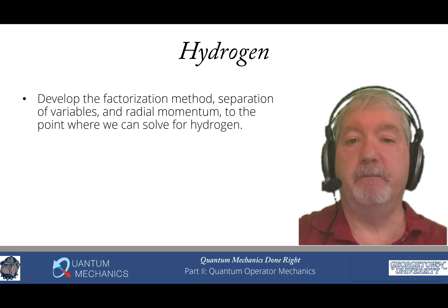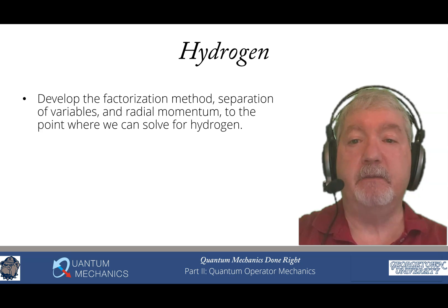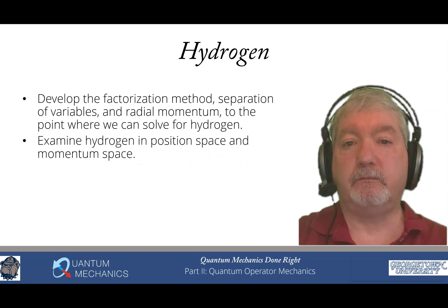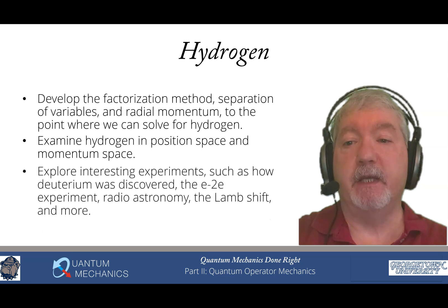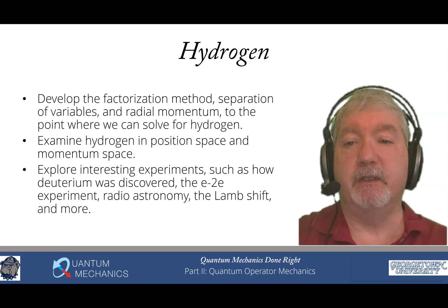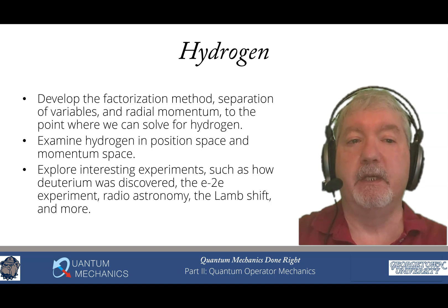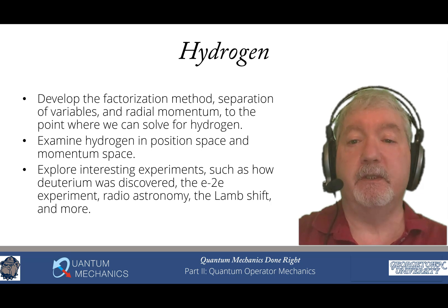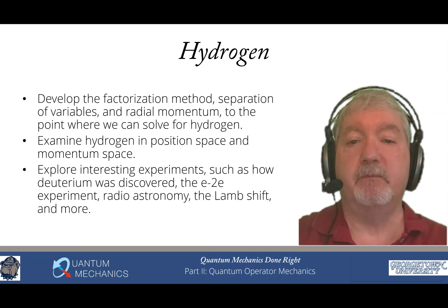Next up is the big one: hydrogen. We develop the factorization method in general, show how you separate variables, include the definition of the radial momentum, and combine all these ideas to solve for the energy eigenstates of hydrogen. We examine wave functions in both position space and momentum space — momentum space being particularly important because it is how we actually image hydrogen. We look at how deuterium was discovered via spectroscopy, the proton charge radius, the E2E spectroscopy experiment that gives us an image of hydrogen in momentum space, radio astronomy, the Lamb shift, and much more.